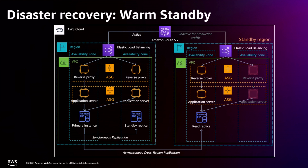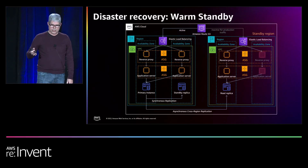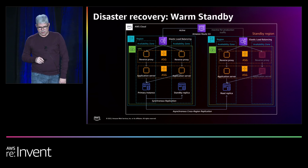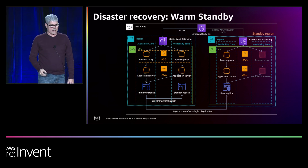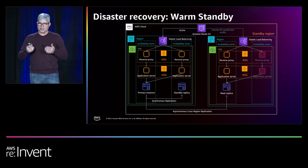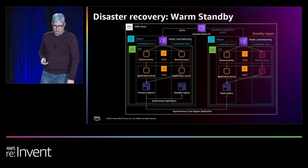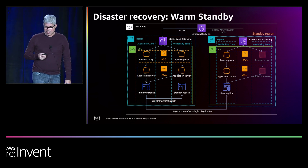The warm standby design pattern looks very similar to pilot light. The only real difference is that instead of having no application servers running, we have one instance running in each region. By having our application stack already running, we can fail over to the alternate region more quickly. We still need to promote the database to primary and update Route 53, but there's no more waiting for the application to launch. After coming back online, we adjust auto-scaling groups to spin up enough instances to handle the full load. You get a much faster RTO. The choice between pilot light and warm standby comes down to whether you need an RTO of minutes versus tens of minutes to justify the extra expense.